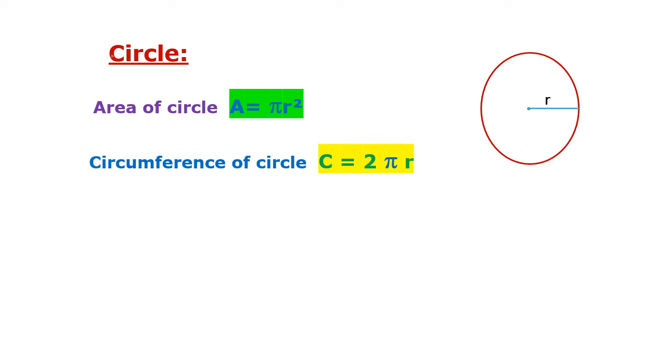Circle. Area of circle A equals pi R squared. Circumference of circle C equals 2 pi R, where pi equals 3.14 or pi equals 22 by 7, and R is the radius of the circle.